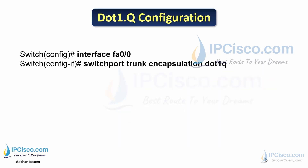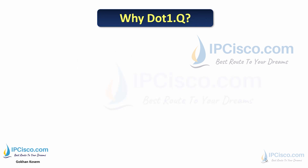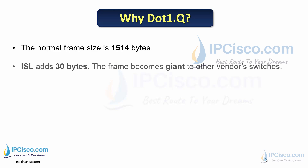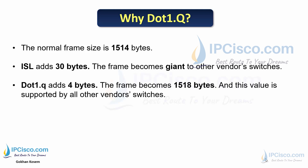To configure 802.1Q, we use the 'switchport trunk encapsulation dot1q' command. Why do we use 802.1Q as the standard today? A normal frame is 1,514 bytes. ISL adds 30 bytes and creates giant frames, and was only supported by Cisco. 802.1Q adds only 4 bytes, creating 1,518-byte frames, which is the standard accepted by all vendors.